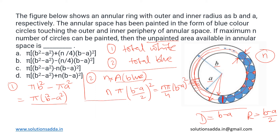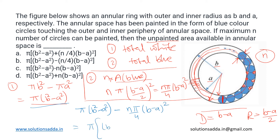Now we have both the total white area and the total blue painted area. The unpainted area equals the total area π(b² − a²) minus the painted area nπ/4 × (b − a)². Taking π common, this gives π × [b² − a² − n/4 × (b − a)²]. This is the unpainted area left after the operation, and the correct option is B.